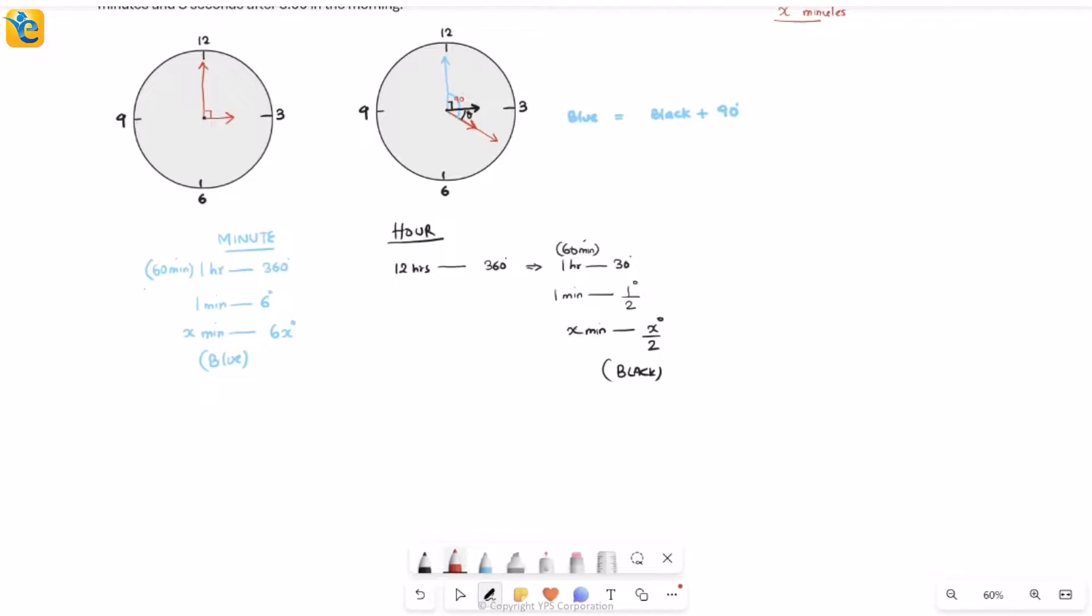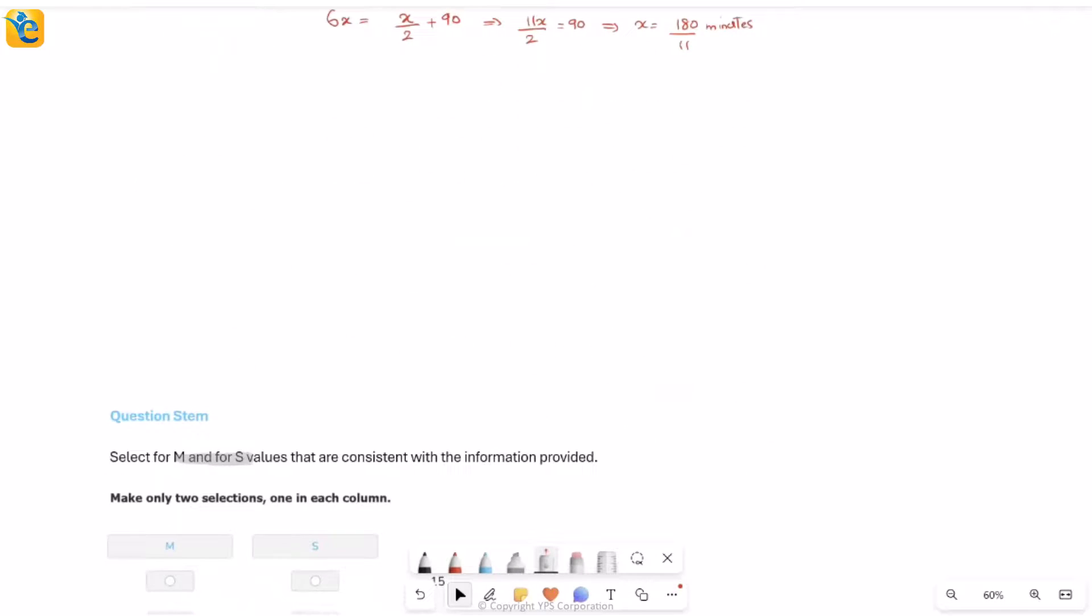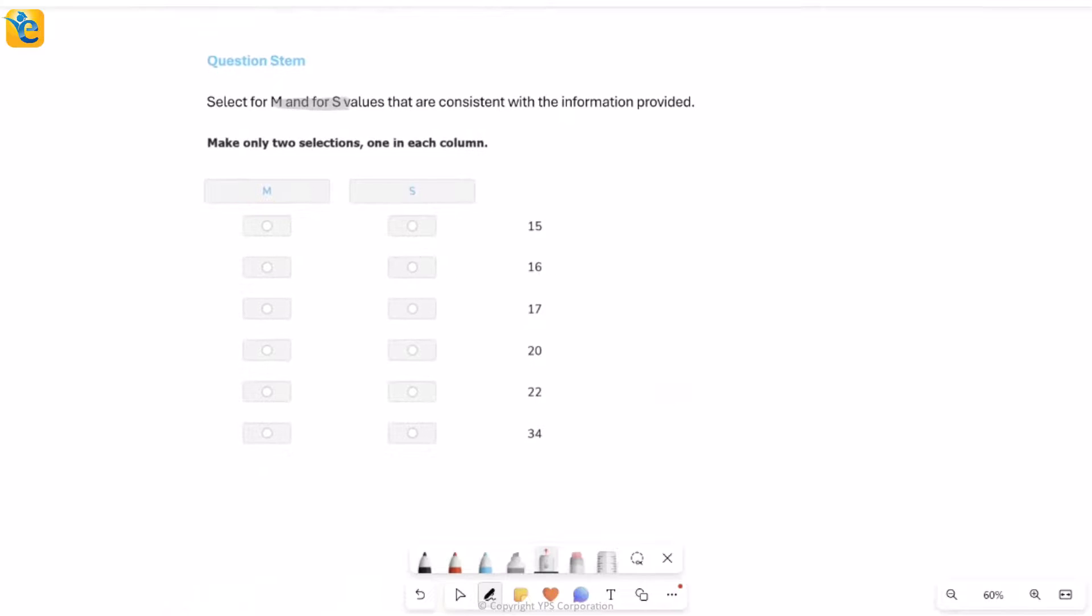Right, let's do this together. So blue, which is 6x, is equal to black, which is x by 2 plus 90. Simply solve this equation. This is 11x by 2 is equal to 90. So x is equal to 180 over 11 minutes. This is the time that I am interested in. But my final answer is not in just minutes. It's in minutes and seconds. So I simply need to convert this further on. So I'll take this to my question and I will take the understanding that it's a total of 180 over 11 minutes and I'll simply now have to break it into minutes and seconds.